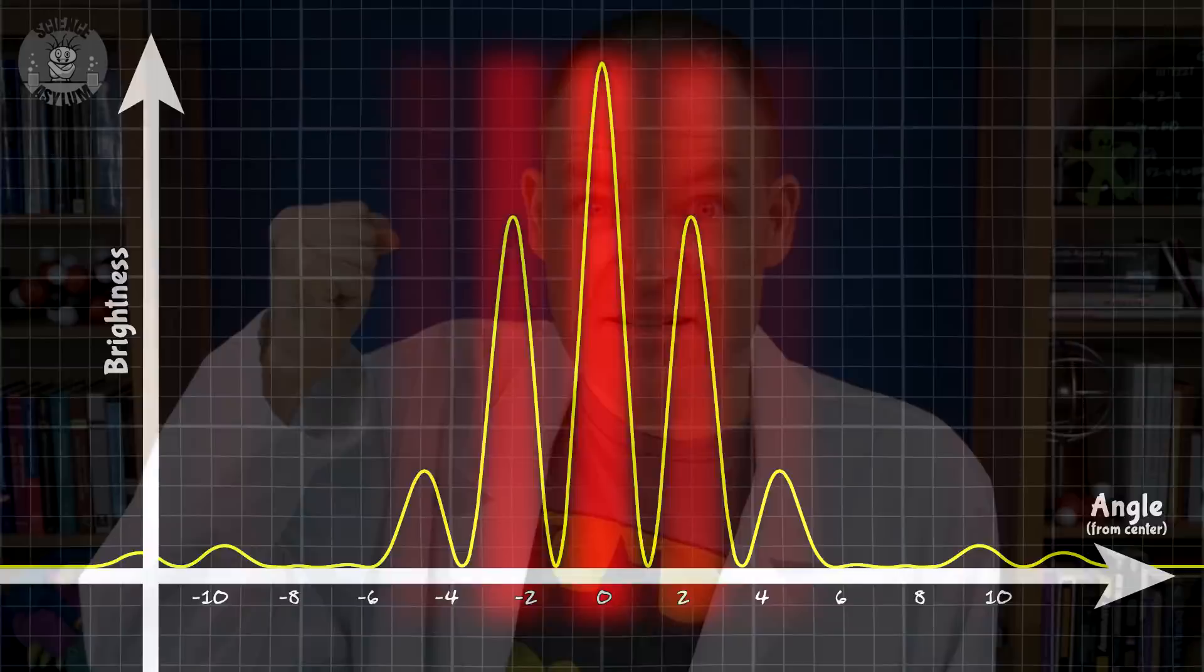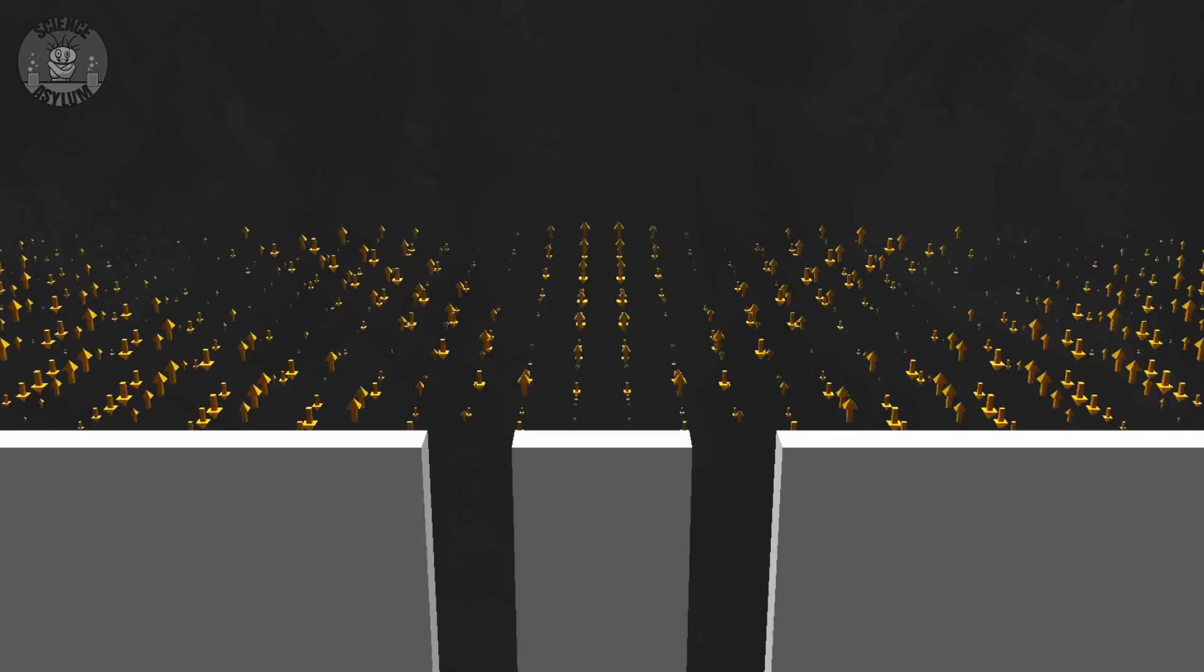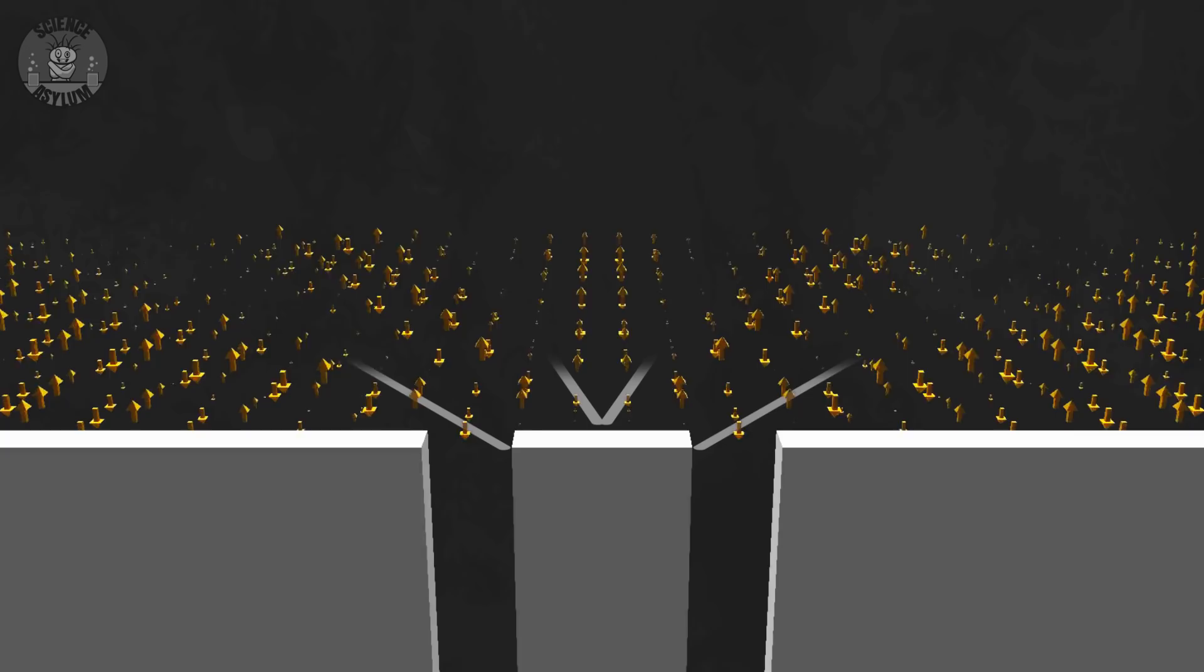But what happens if we move the wall closer or farther away? It'll change the size of the pattern, but not its shape. The wave interference is happening all throughout the space between the slits in the wall. If you could actually see the electromagnetic field, the places you'd find dark lines would be pretty obvious.